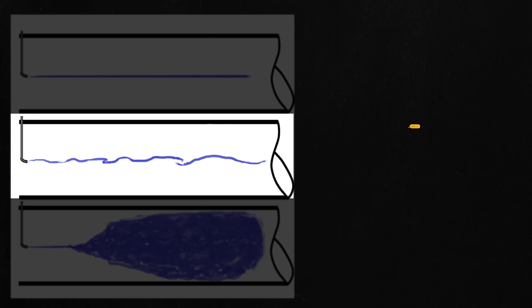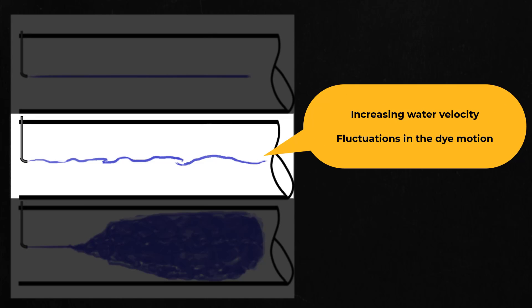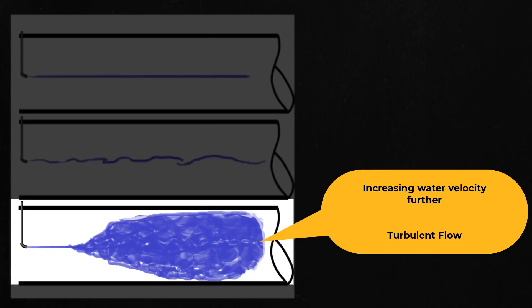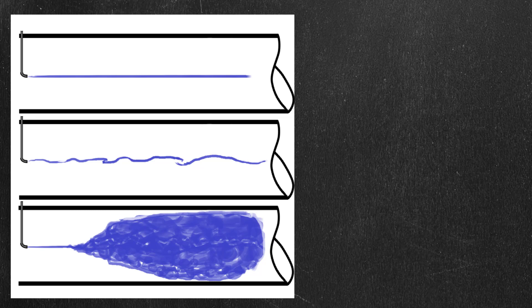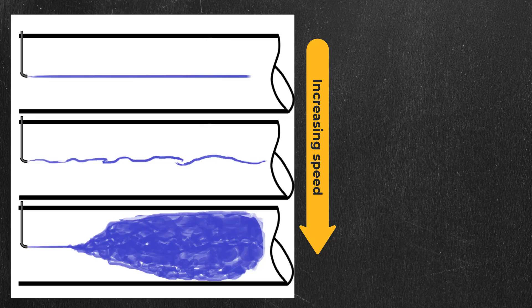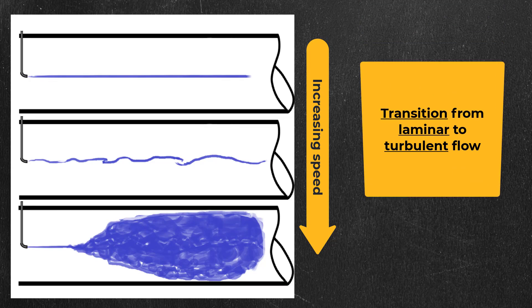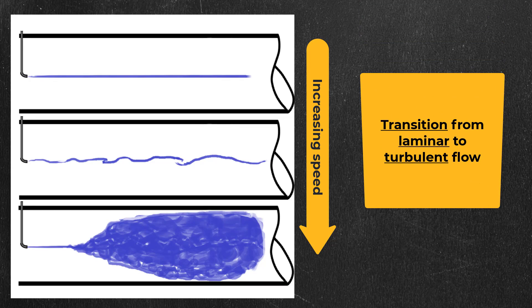As the velocity of the water was increased, the dye began to exhibit fluctuations and as the velocity continued to increase, after a certain point the dye would quickly mix and disperse. This is known as turbulent flow. In other words, as the speed is gradually increased, the flow undergoes a transition from laminar to turbulent motion.